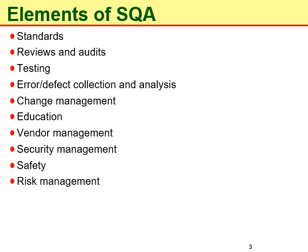Code inspection is done by a trained mediator or peer and is based on rules, checklists, entry and exit criteria. In inspection it is recommended that the inspector is not the author of the code to make this process unbiased.